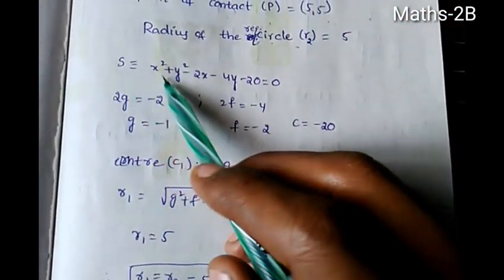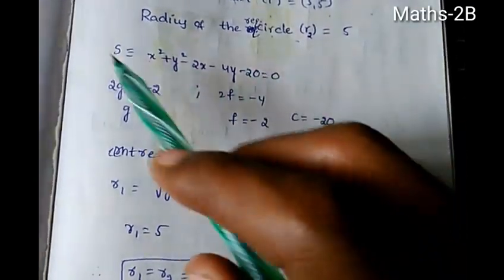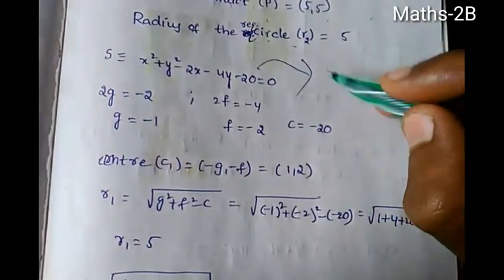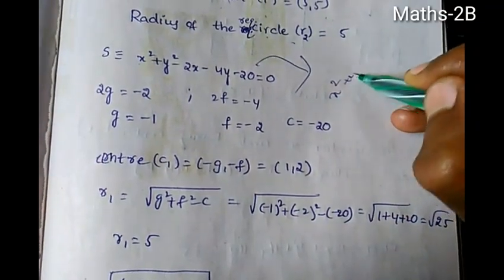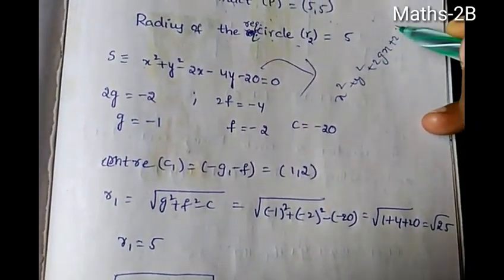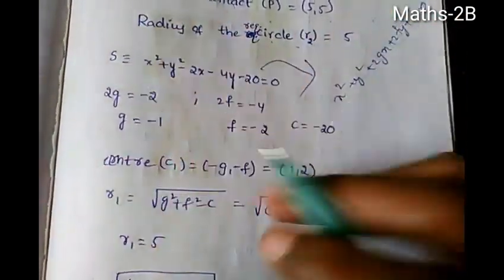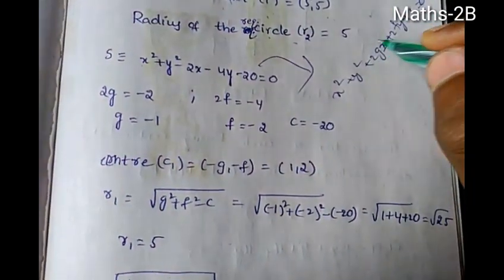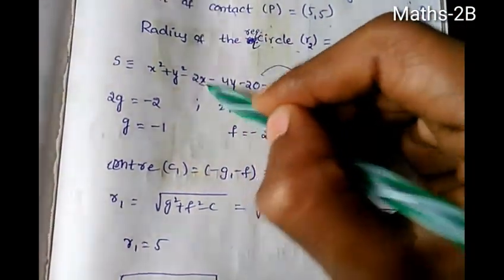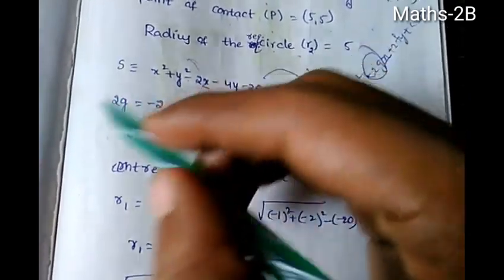Let S₁ equal x² + y² - 2x - 4y - 20 = 0. The general equation of a circle is x² + y² + 2gx + 2fy + c = 0. Comparing, we get 2g = -2.